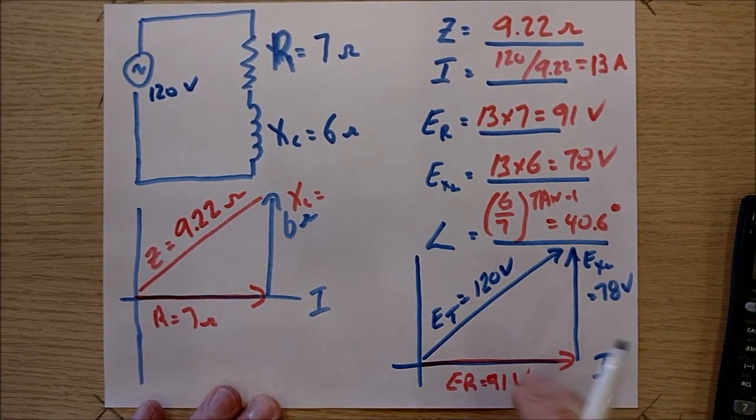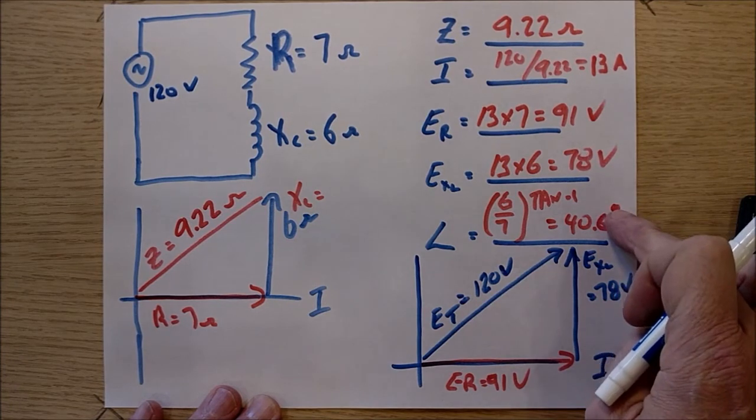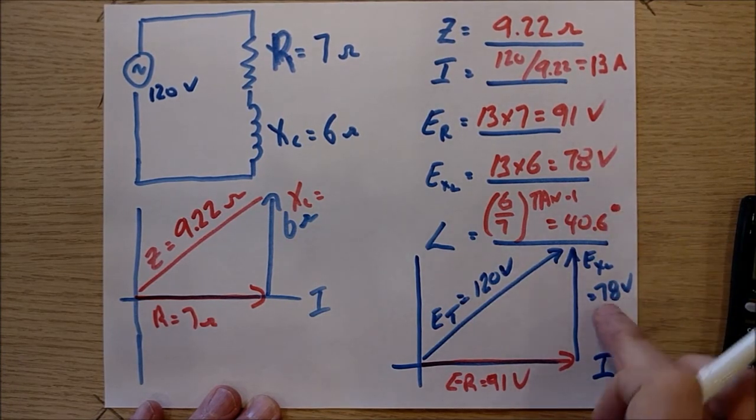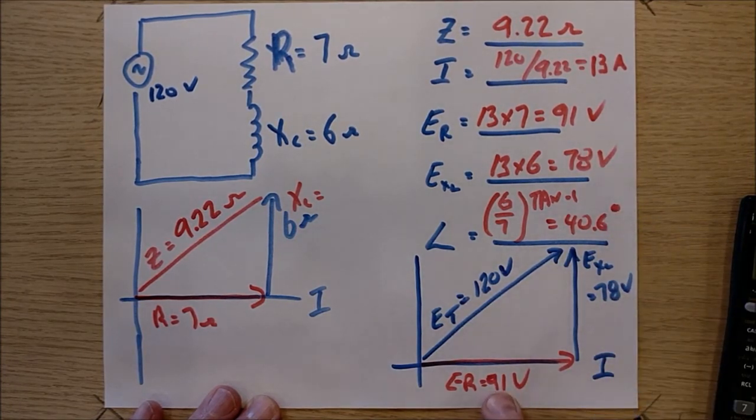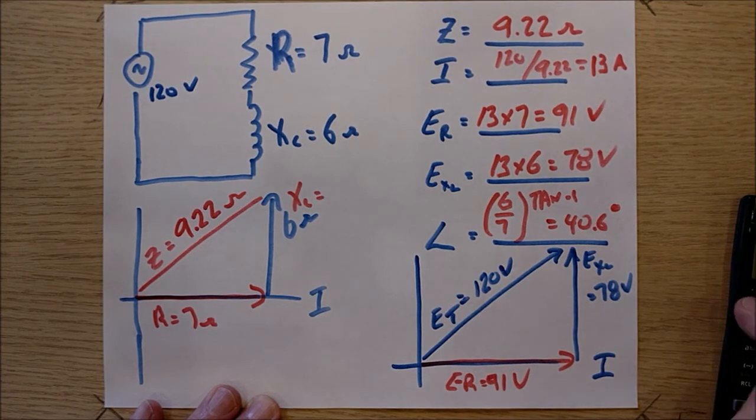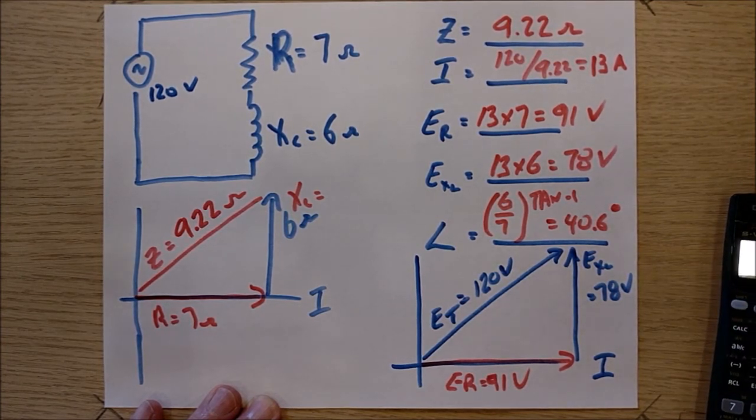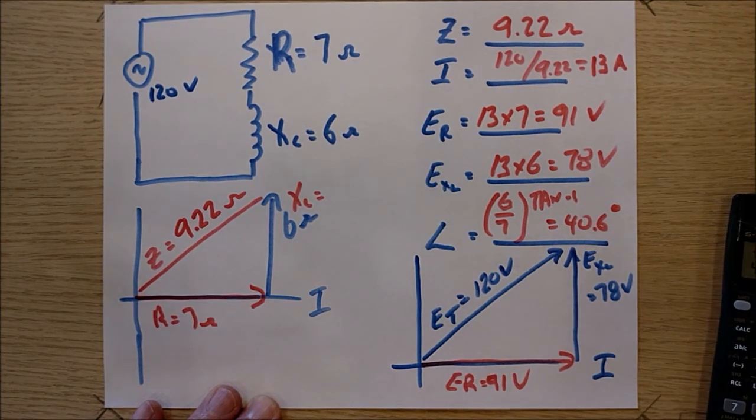And if I want to double check this angle, it should be 78 over 91 inverse tan. Let's try that for a second. 78 divided by 91 equals shift tan equals. And I'm getting 40.6 degrees. Perfect. This is Eric signing out.